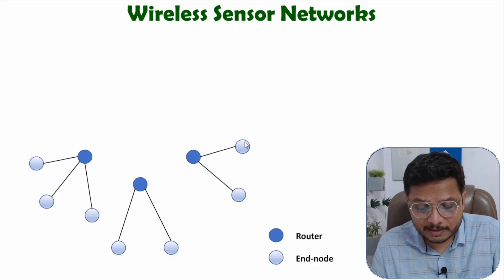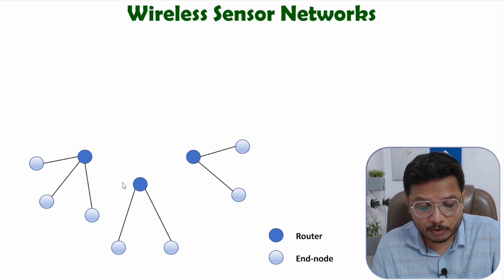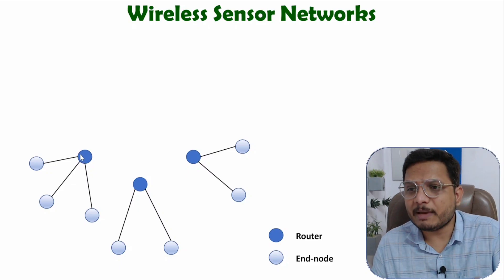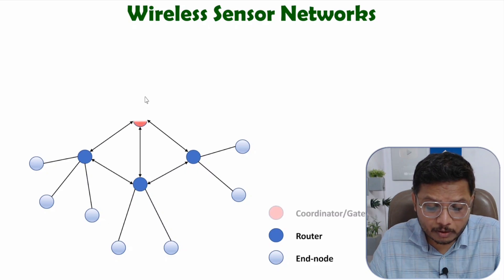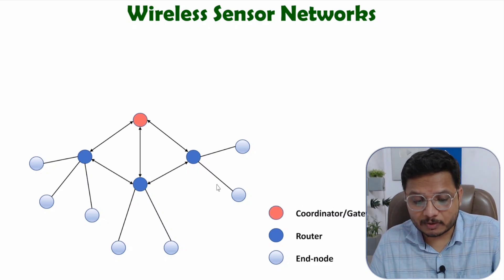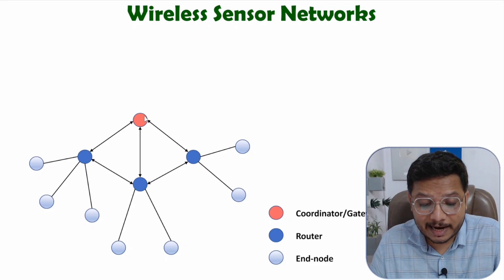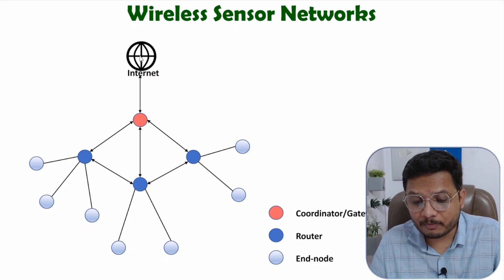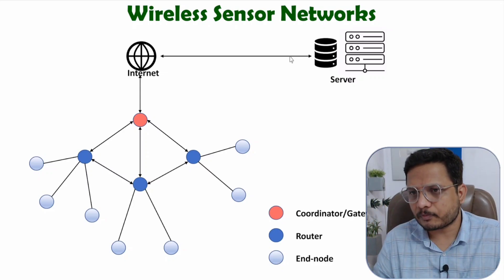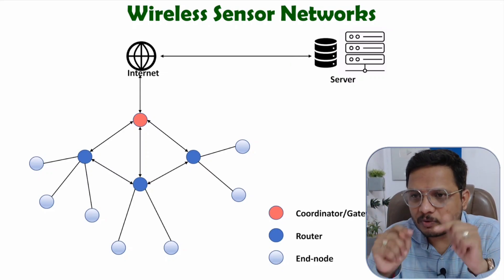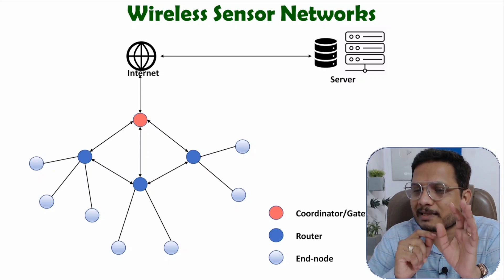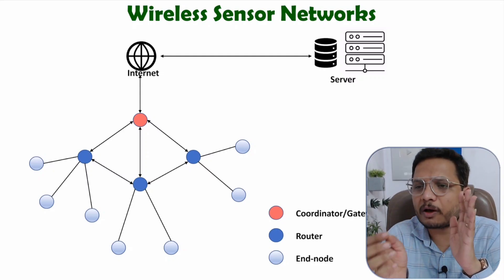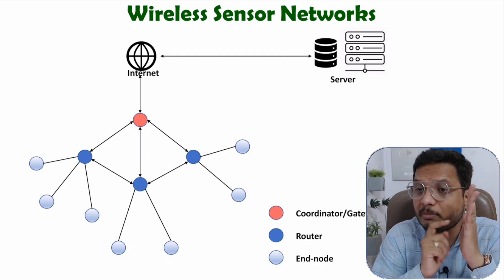Once that physical data is measured, it will be routed to a router with wireless communication — so this communication to the router will be wireless. This router will be having physical data from multiple end nodes. That data will be given to the coordinator, and that coordinator is the gateway. Now this gateway will pass on that data to the internet, where there will be a server on which we will be storing all the physical data. The user will be using it as per application — like if you are using a wireless sensor network application, then in your mobile or computer, you will have an application.